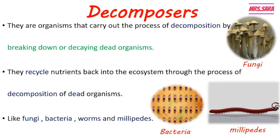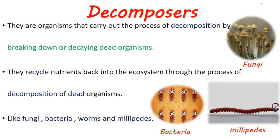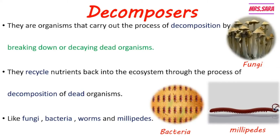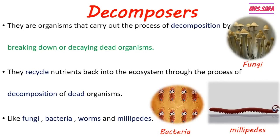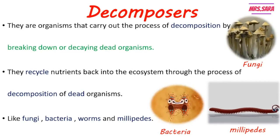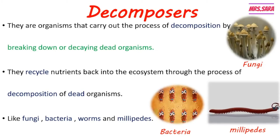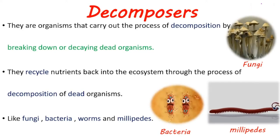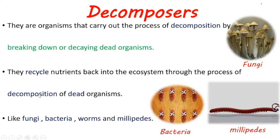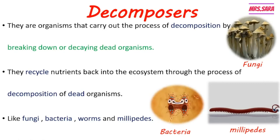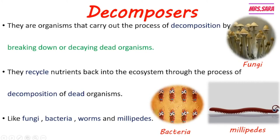Decomposers live on the dead bodies of dead organisms and recycle nutrients back into the ecosystem. They take nutrients from the dead bodies and recycle them again through the process of decomposition. There are three types of decomposers: fungi, bacteria, and millipedes.